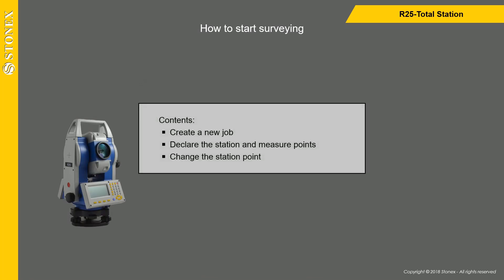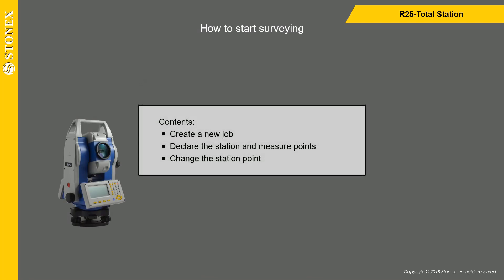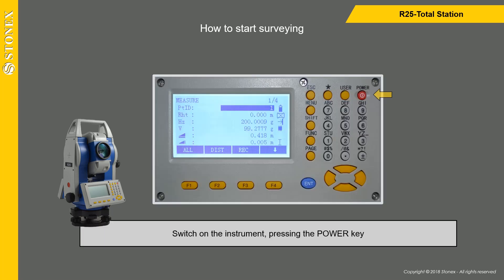In this video, we see how to create a new job, declare the station and measure points, and change the station point. Switch on the instrument by pressing the power key.